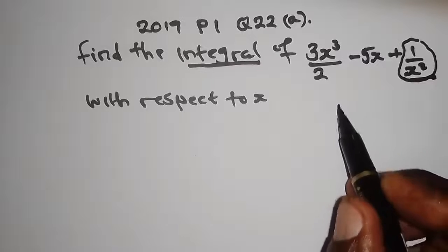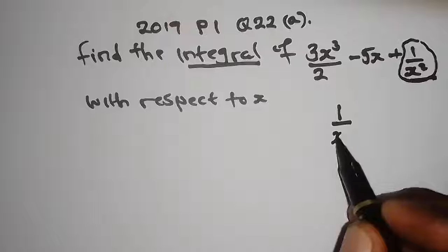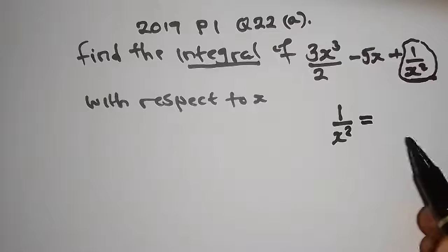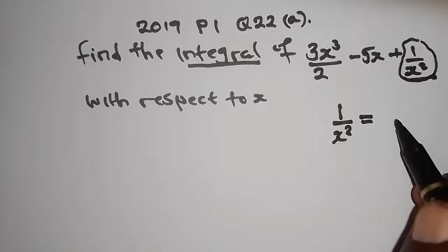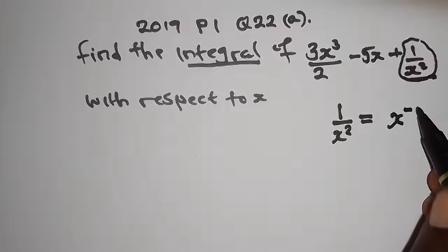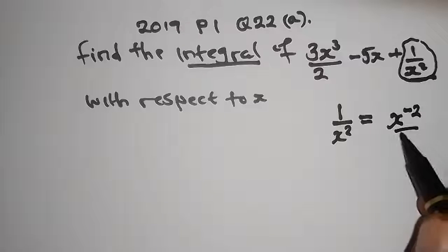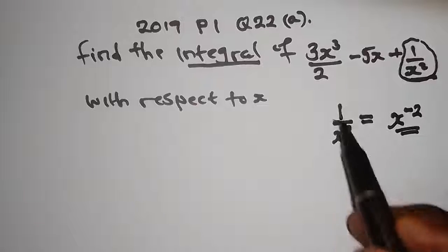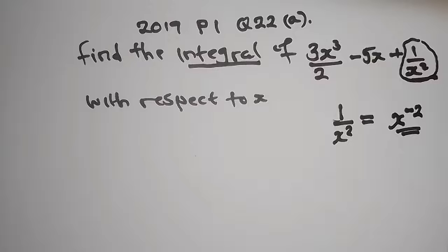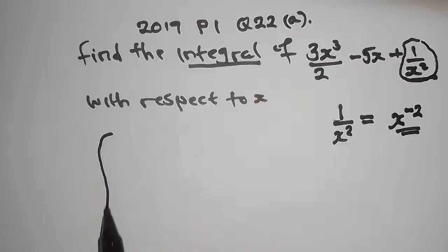When you apply the laws of indices to something like 1 over x squared, you can convert it to a negative index. That power of 1 over x squared implies a negative index, giving us x to the power negative 2.